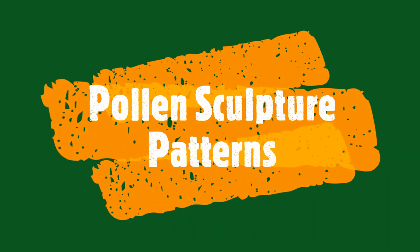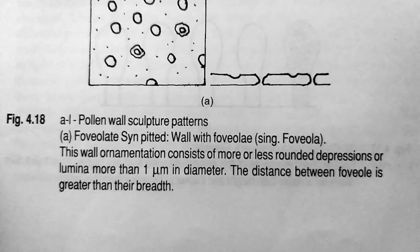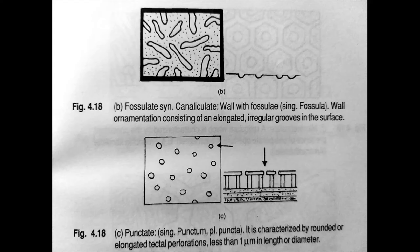Next we'll talk about pollen wall sculpture patterns. To start with, we have foveolate type. This wall ornamentation consists of more or less rounded depressions or lumina more than one micrometer in diameter. The distance between foveola is greater than their breadth.